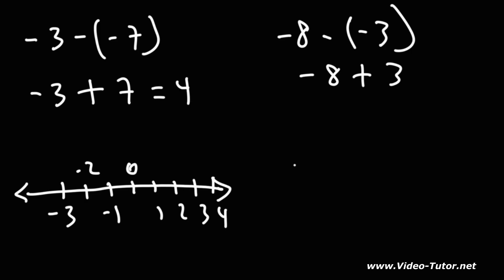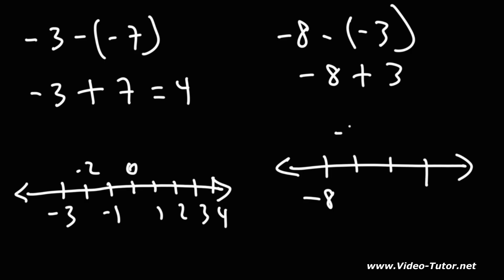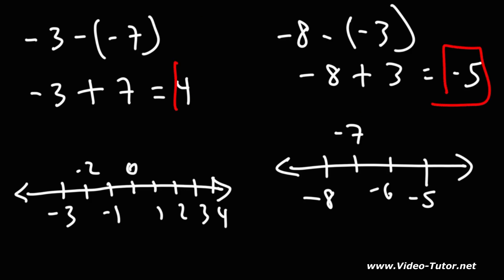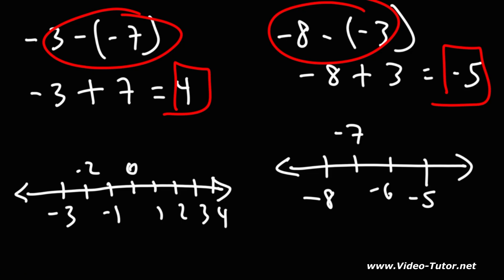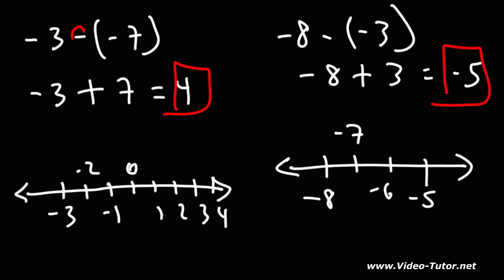Now, negative 8 plus 3. Starting at negative 8, we travel three units to the right — negative 7, negative 6, negative 5. So negative 8 plus 3 is negative 5. That's what you can do whenever you're subtracting negative numbers: anytime you see two negative signs next to each other, you can replace that with a positive sign. Thank you.